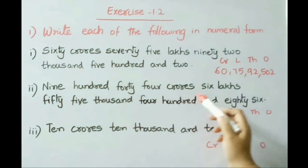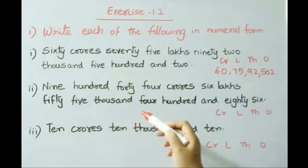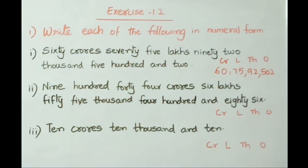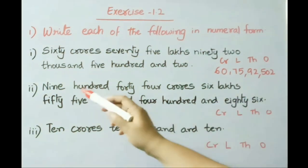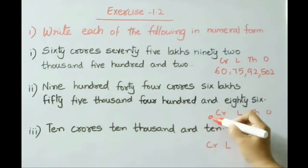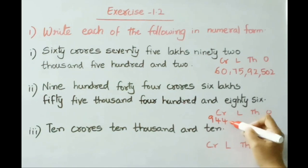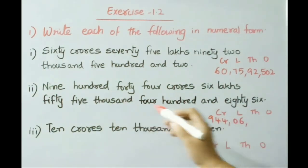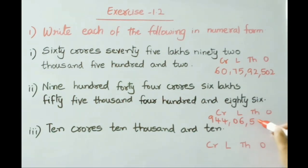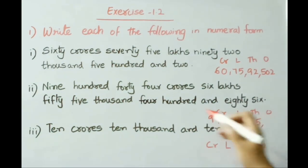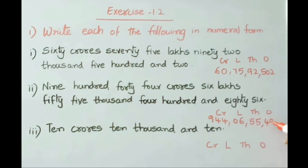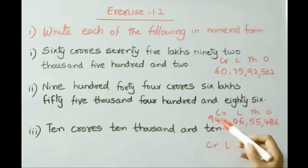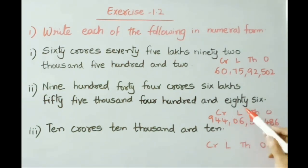See the second one: 944 crores, 6 lakhs, 55,486. Under the crores period write 944, under lakhs write 06, under thousands write 55, under ones write 486. So the number is 944,06,55,486.